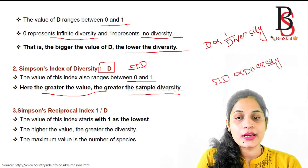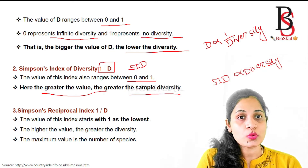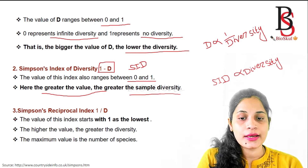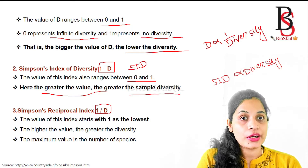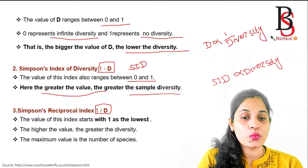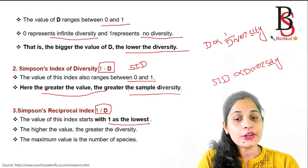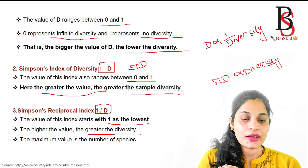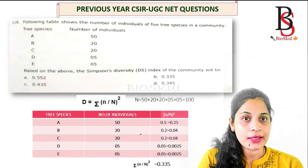The third one is Simpson's Reciprocal Index, calculated as 1/D. The value of this index starts at 1 as the lowest value, and the higher the value, the greater the diversity. Now we'll look at a previous year CSIR UGC NET question.